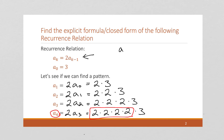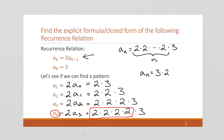So what we have is: if we had an a sub n, we would have n 2s times 3 — there would be n of these 2s. And the way we write that as an explicit formula, we say that a sub n is equal to 3 times 2 to the power of n, because 2 to the power of n is just 2 multiplied by itself n times. An explicit formula always has a starting point, so we say for all n greater than or equal to 0.